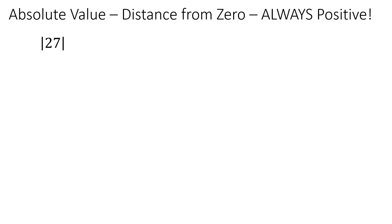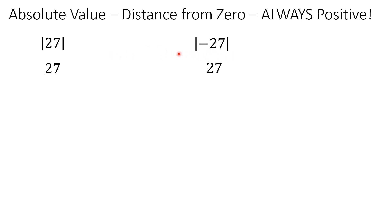Absolute value is written using two straight vertical lines, which is the notation for absolute value. Whatever is in between those two lines represents the distance from zero. So the absolute value of 27 is 27 — it's 27 units from zero. And the absolute value of negative 27 is also 27, because negative 27 is 27 units from zero, just in the negative direction.